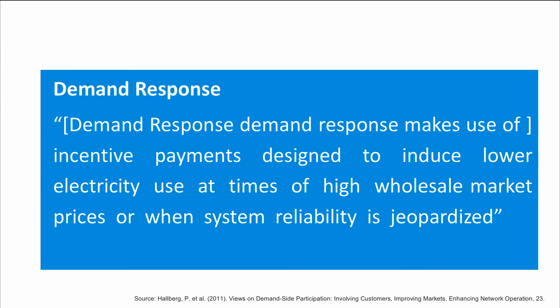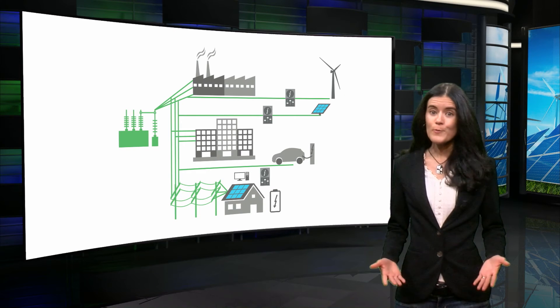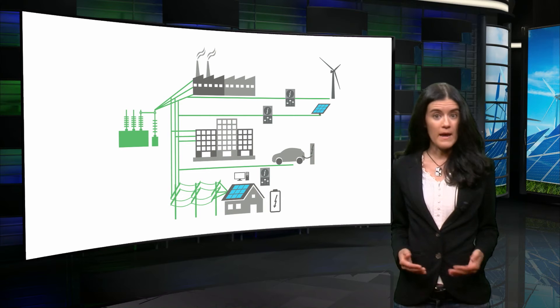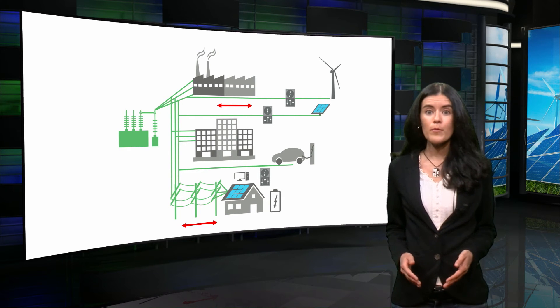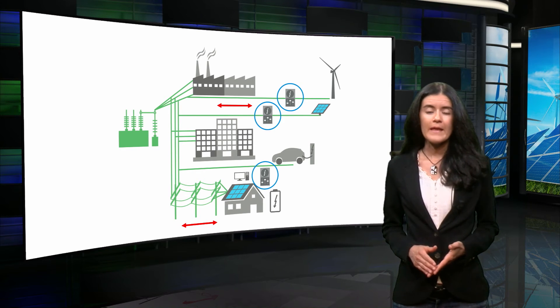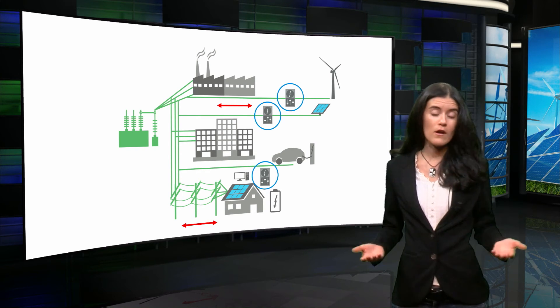One of these methods is demand response. According to Euroelectric, demand response makes use of incentive payments designed to induce lower electricity use at times of high wholesale market prices or when system reliability is jeopardized. Two main differences between a passive and an active distribution network are that the power flows are bi-directional, and that the decision-making processes and control mechanisms are now distributed, occurring at the low voltage level. This is in contrast to passive distribution networks, in which there is no distributed generation and loads are uncontrollable.